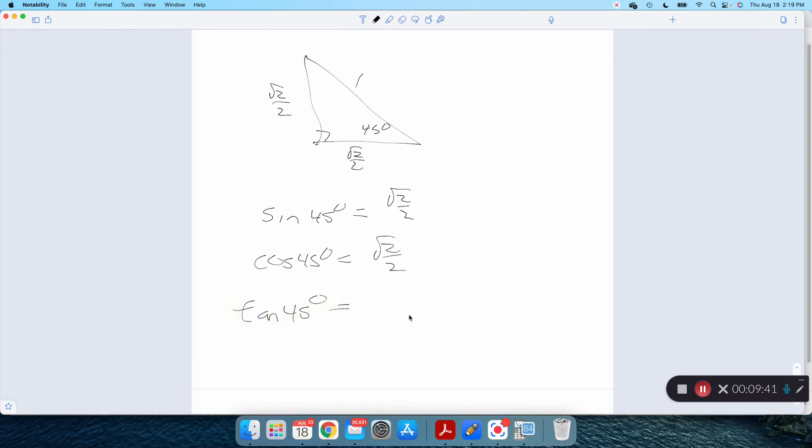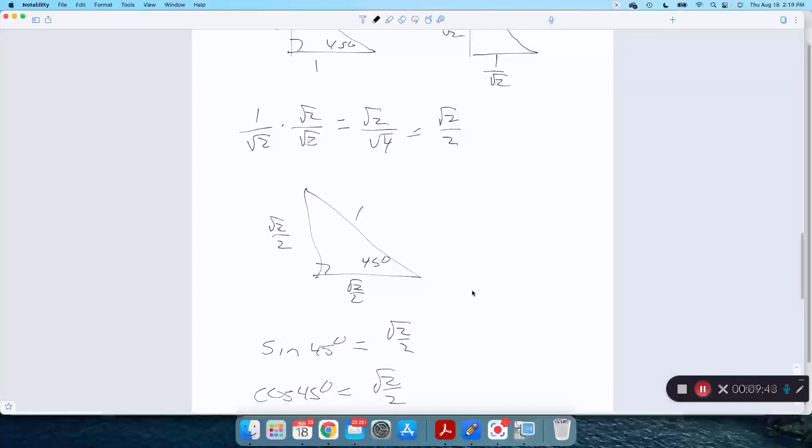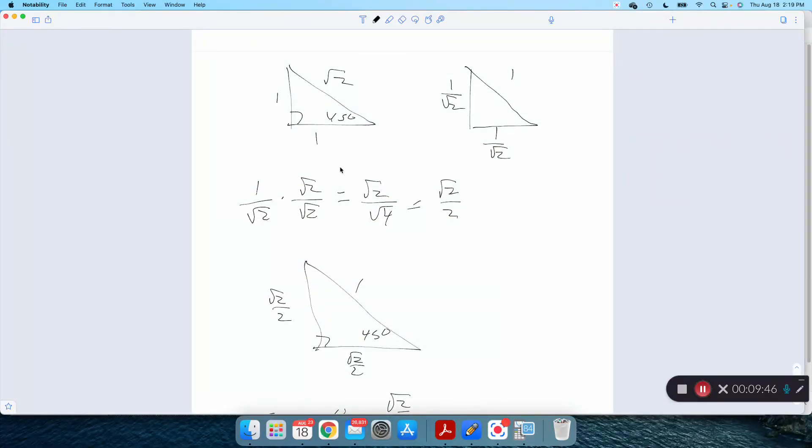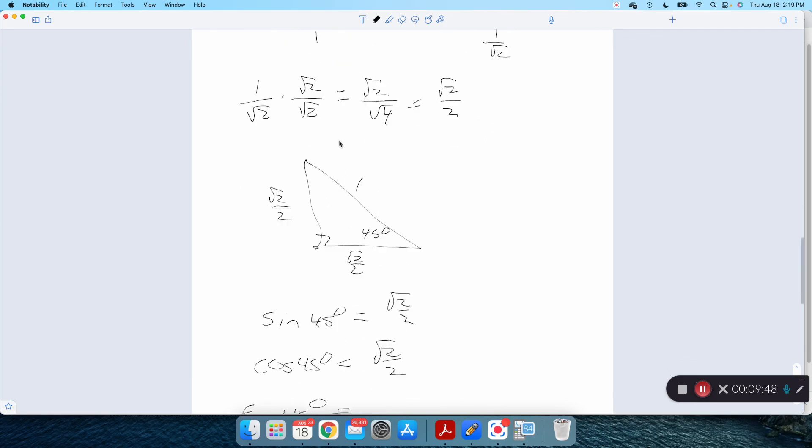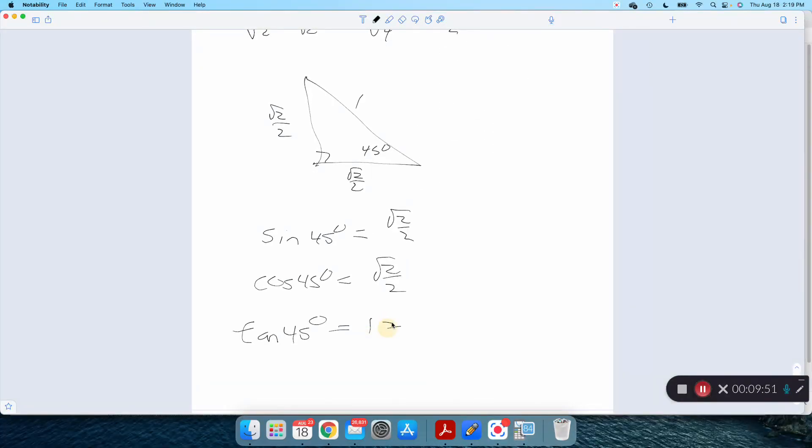Tangent of 45 degrees. I could use, say, this version of the triangle, 1 over 1, opposite over adjacent. Or, I could think tangent is just sine divided by cosine. Those things are equal. Anything divided by itself is 1. Tangent of 45 degrees is 1. Memorize that. Sine and cosine of 45 degrees are root 2 over 2. And that's a good place to stop. Thank you.